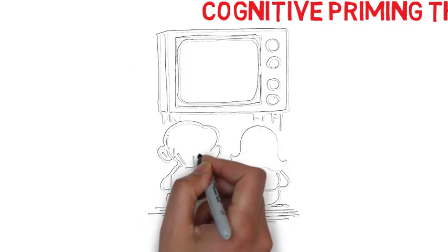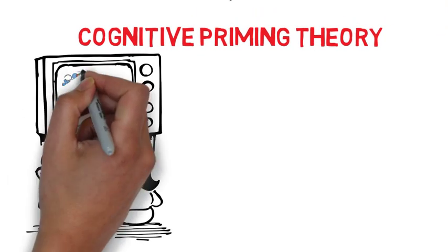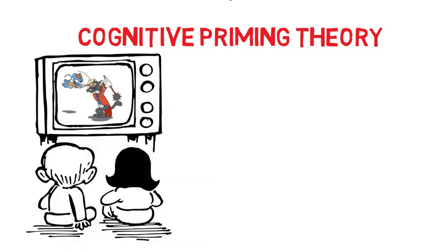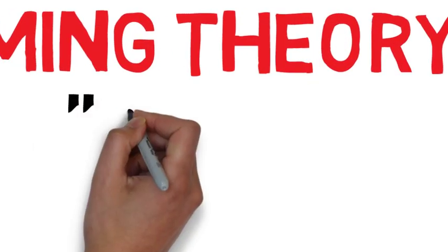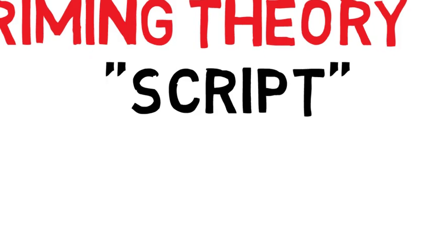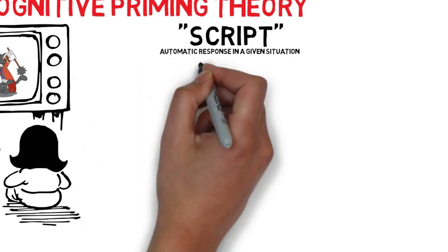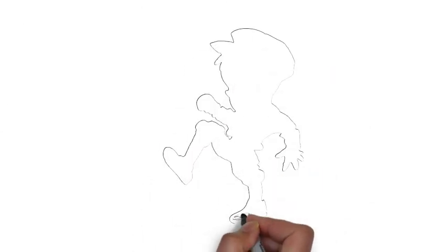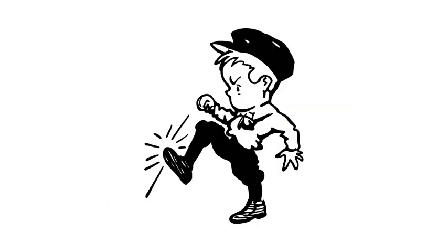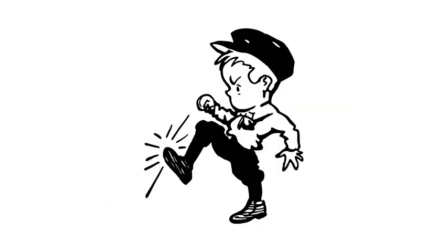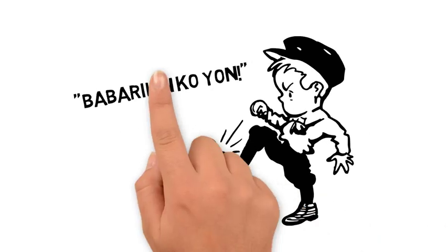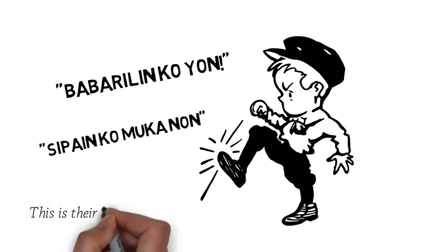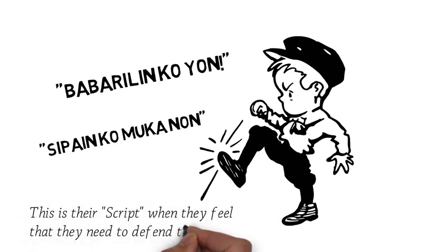Pero ngayon, na-replace na ng cognitive priming theory ang social learning theory because it explained more varied behavior. Sabi sa theory na ito, kapag lagi na-expose ang mga bata sa violent media like sa games, movies, etc., nade-develop nila yung tinatawag na script. Ito yung automatic behavior or response nila if ilalagay mo sila sa isang aggressive environment or situation. Kaya subukan mong tanongin ang kakalala mong 7 years old na na-expose sa mga games na barilan or GTA — pag tinanong mo sila anong gagawin mo pag may kaaway, baka sabihin nila paboritin ko yan, because they already developed a script for such situation.